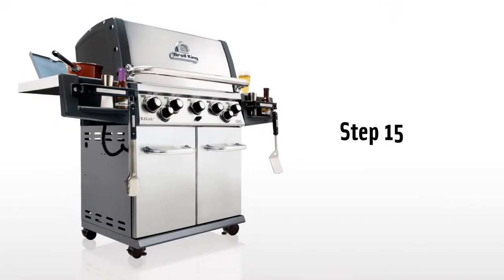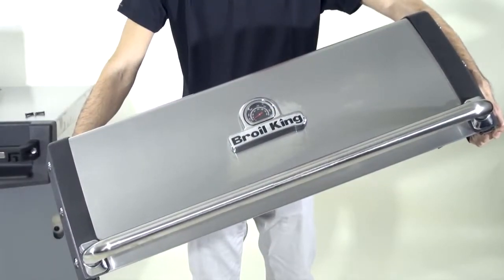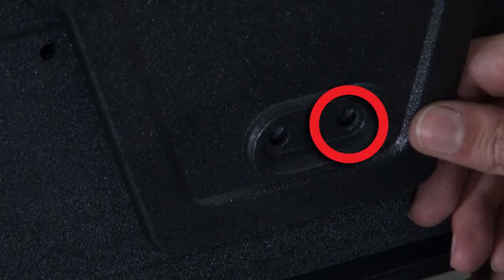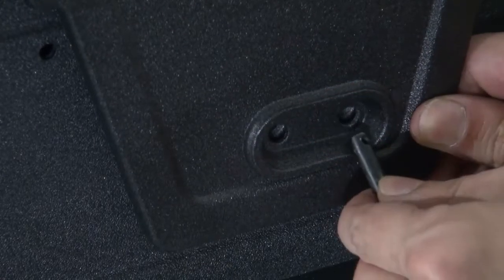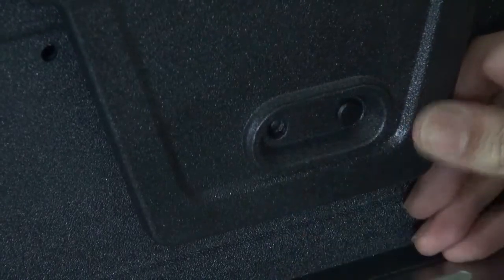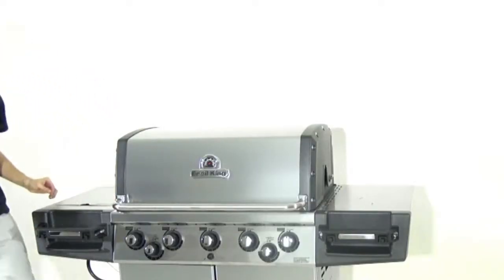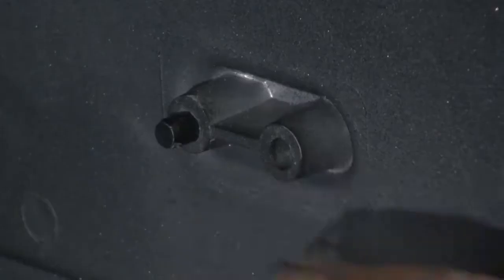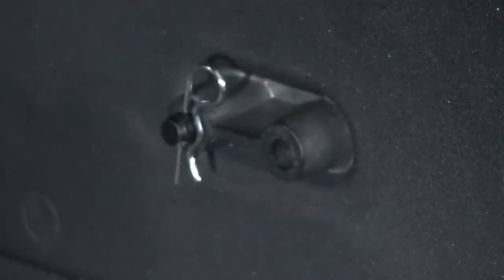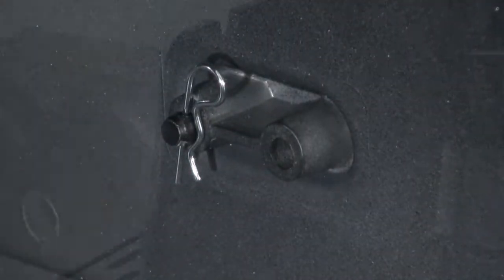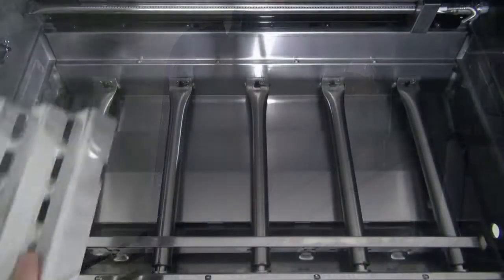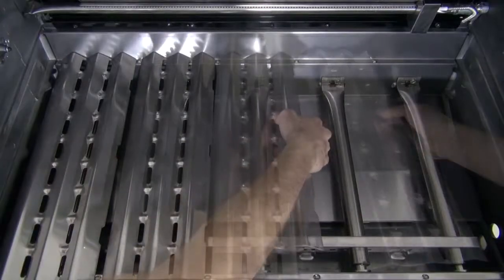Step 15. Attach the lid to the cook box assembly using the roll pins and cotter pins. Note the location of the pin on the lid and the cook box. Now install the roll pin in the rear opening for both lid and cook box. Install the flavor waves.